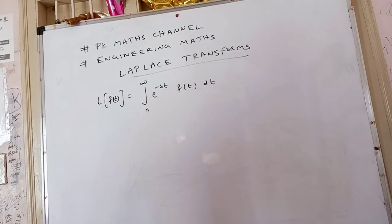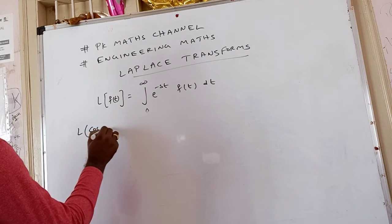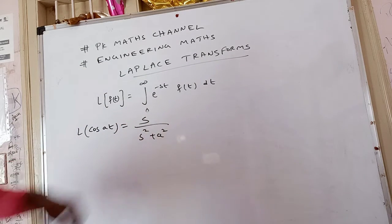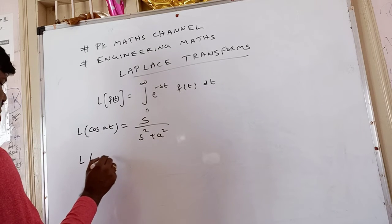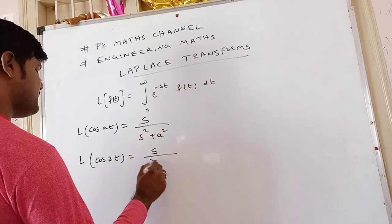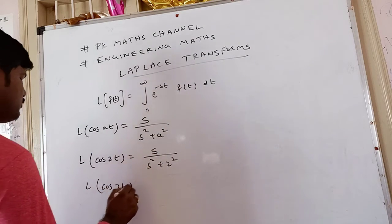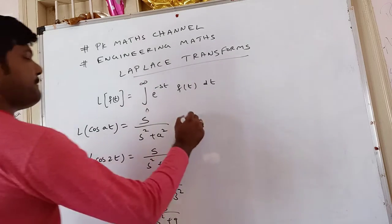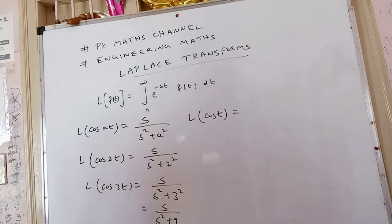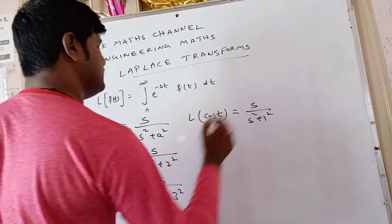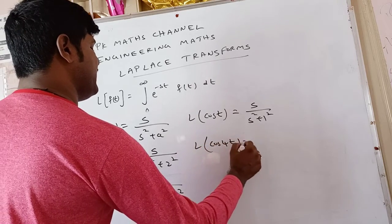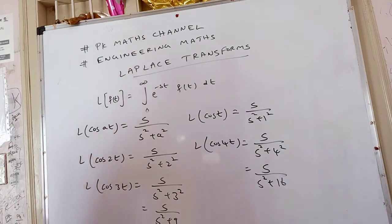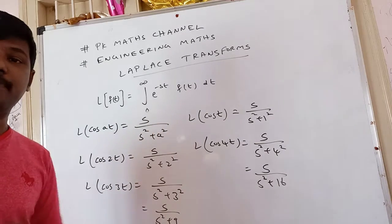The next formula: L{cos(at)}. Laplace of cos(at) = s / (s² + a²). For sine you wrote a/(s² + a²); for cosine it is s/(s² + a²). For example: L{cos(2t)} = s/(s² + 4), L{cos(3t)} = s/(s² + 9), L{cos(t)}: a = 1, so s/(s² + 1), L{cos(4t)} = s/(s² + 16). When sin is given, numerator is a; when cos is given, numerator is s. Remember this, dear students.